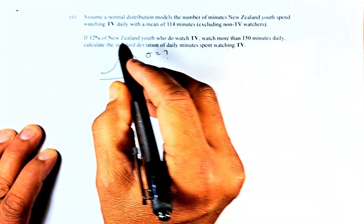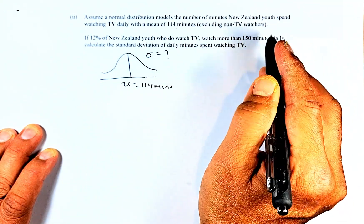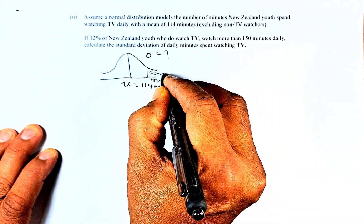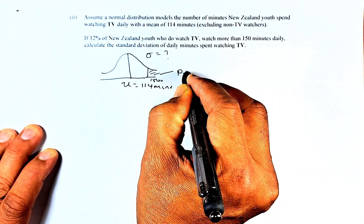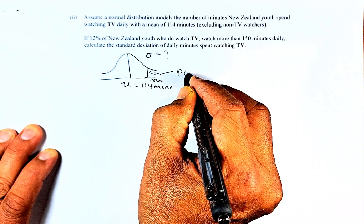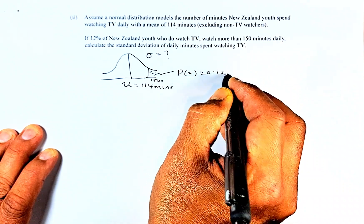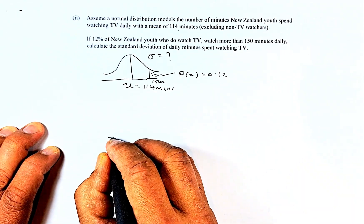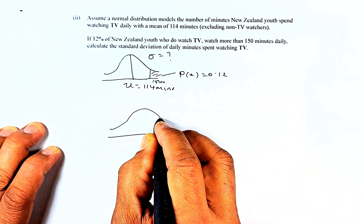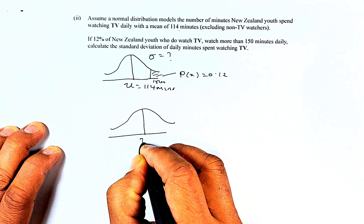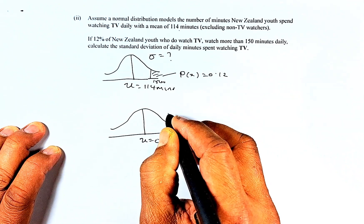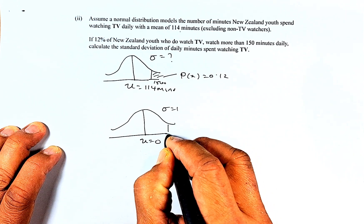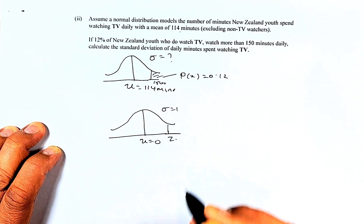And you know that 12% watch more than 150 minutes. So 150 minutes is here, and 12% means the area or probability is going to be P(X > 150) = 0.12. So we need to standardize it. To standardize, the same thing here: mu is going to be equal to 0, and sigma is going to be equal to 1.